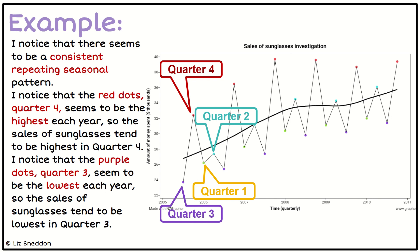So then I want to identify, well, when are the highest ones? And I can see on my graph that the red points all tend to be the same quarter four time. So then I need to put that in context. Well, this is talking about the amount of money people spend in thousands of dollars on sunglasses. So I can say, well, the sales of sunglasses tends to be highest in quarter four. Notice I'm using that kind of suggestive language, tends to be, because I can't guarantee it will always be.